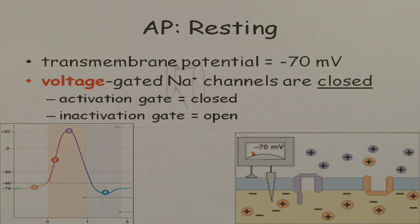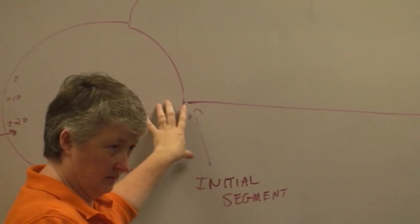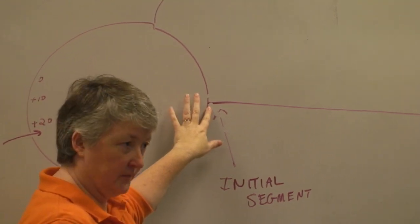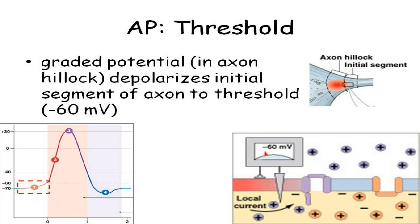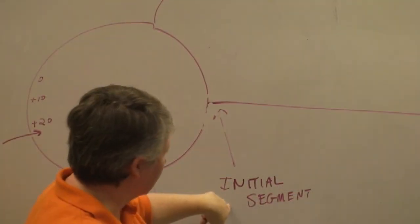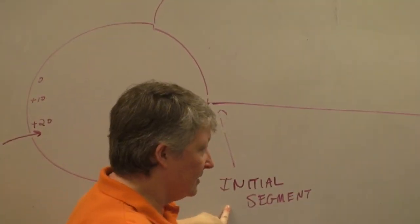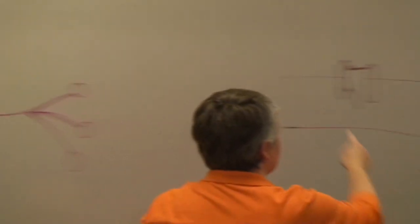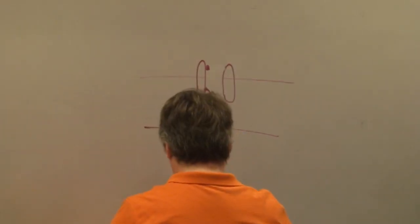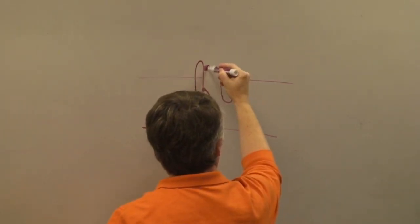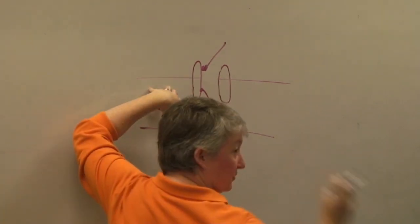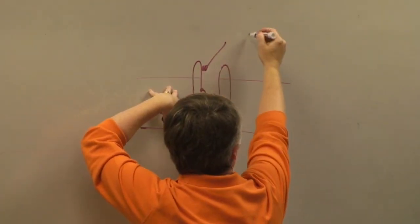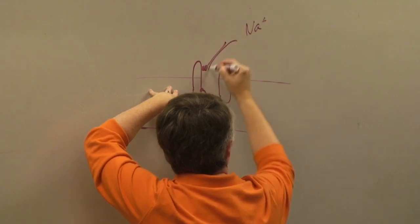If you get a graded potential strong enough to get to threshold — to depolarize that initial segment, the axon hillock, the very beginning of the axon — to minus 60, then what will happen is this first sodium channel will open. At minus 60 threshold, the voltage-gated sodium channel opens and sodium rushes in.